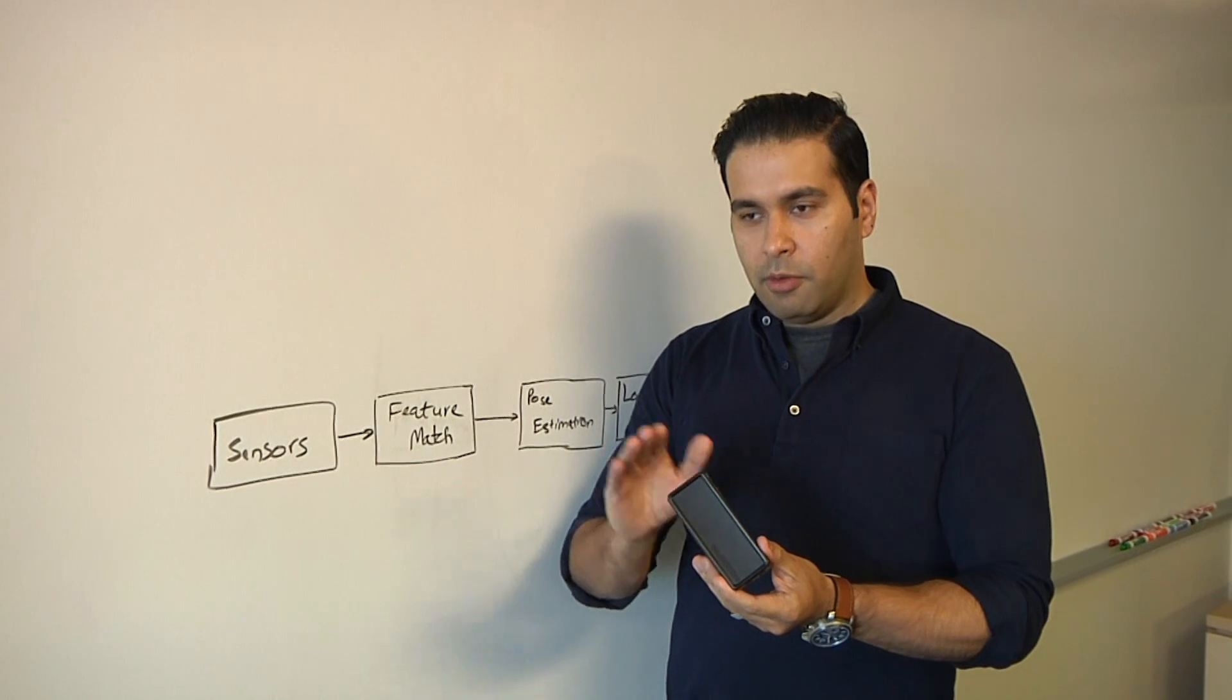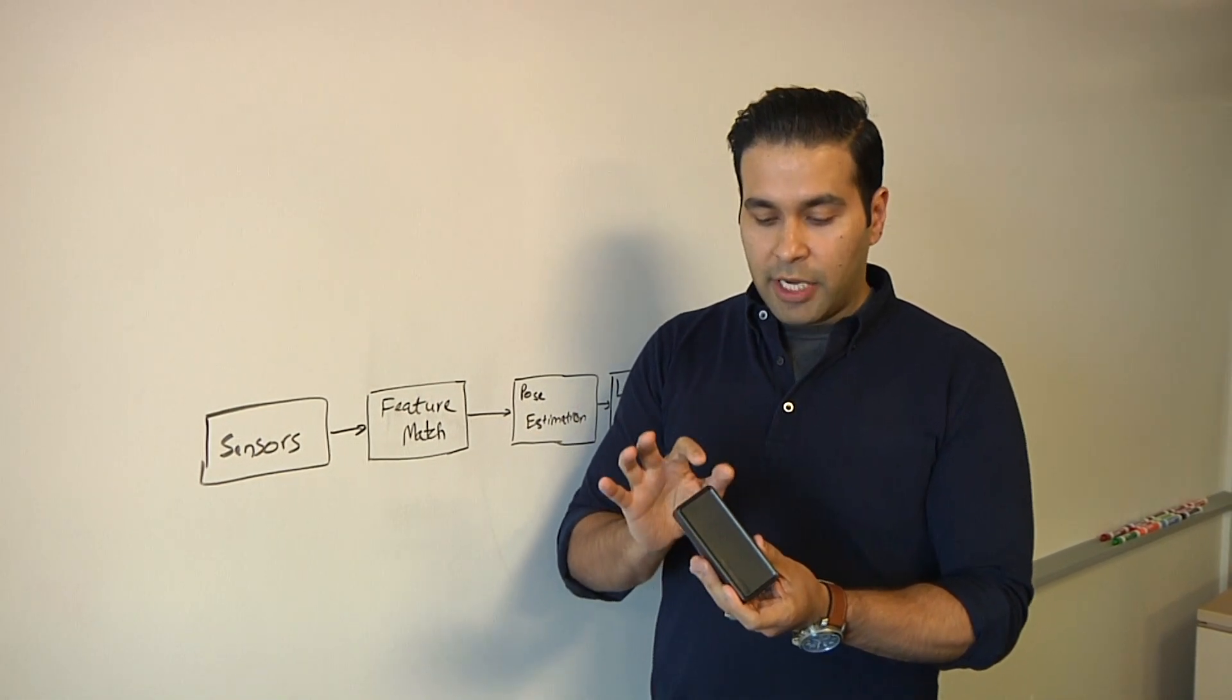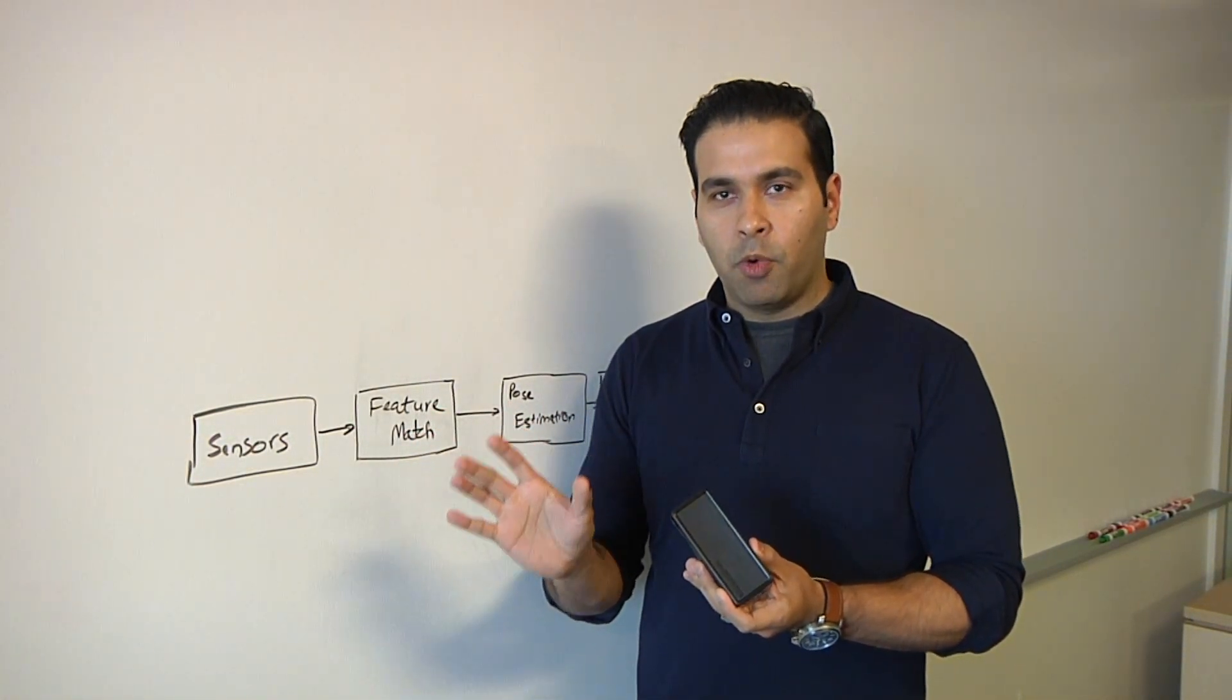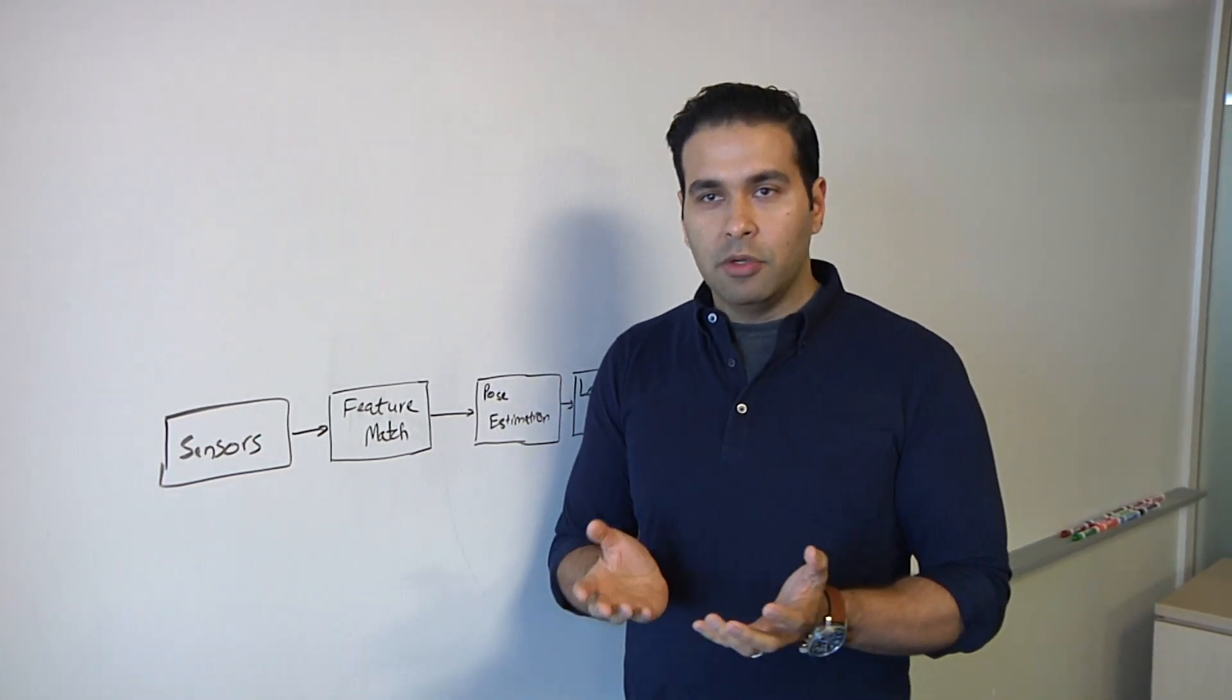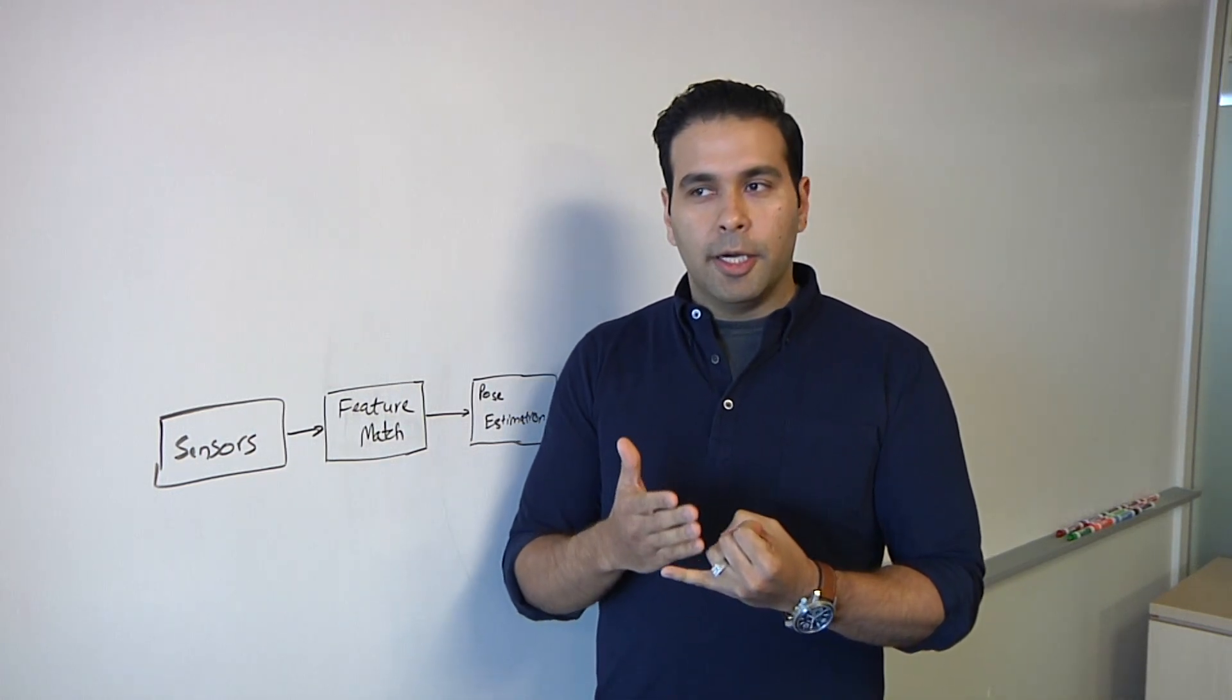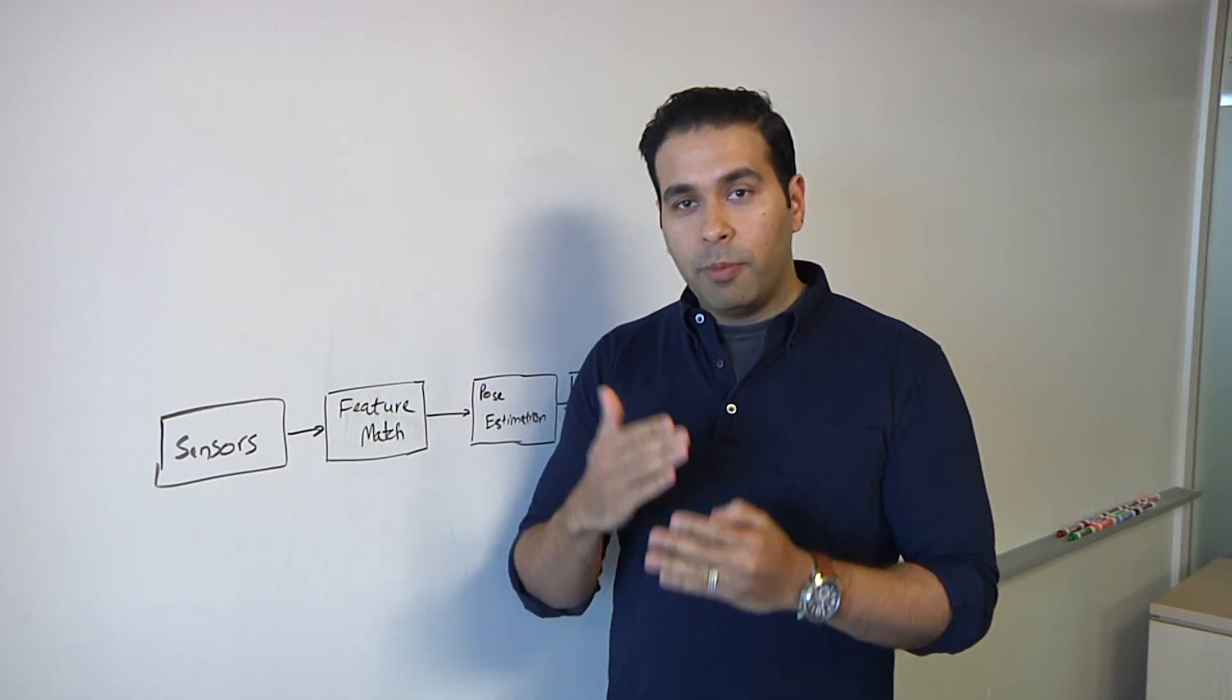But when you move to frame number two, the goal is you want to be able to identify one, two, three, four as the same corner points or interesting points in the second frame. Now, how you relate those two, there are a variety of algorithms that can be used to do that. But typically for feature extraction, you can use things like SIFT, SURF, the difference of Gaussian, ORB, and things like that.